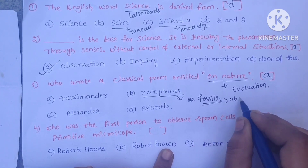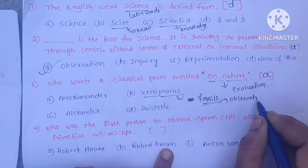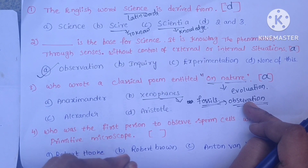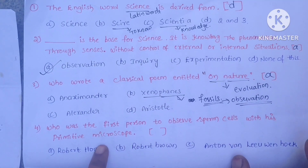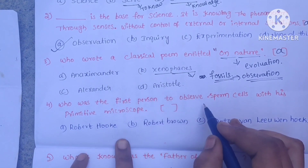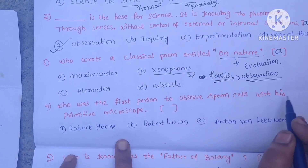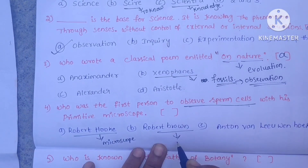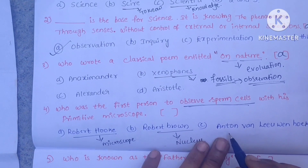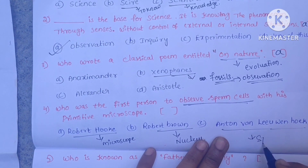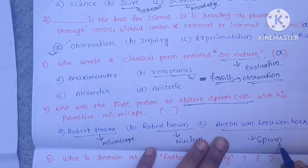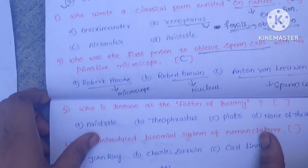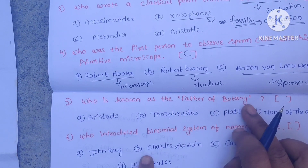The fourth question is: who was the first person to observe sperm cells with a primitive microscope? The correct answer is Option C.